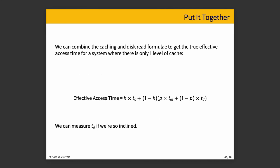You can combine these equations. With one level of cache to keep the equation simple, the full combined formula is: the hit rate times the time to get data from cache, plus the chance of a miss times the chance it's found in memory times the time to retrieve from memory, plus the chance it's on disk times the time to retrieve from disk, which we can measure as Td.